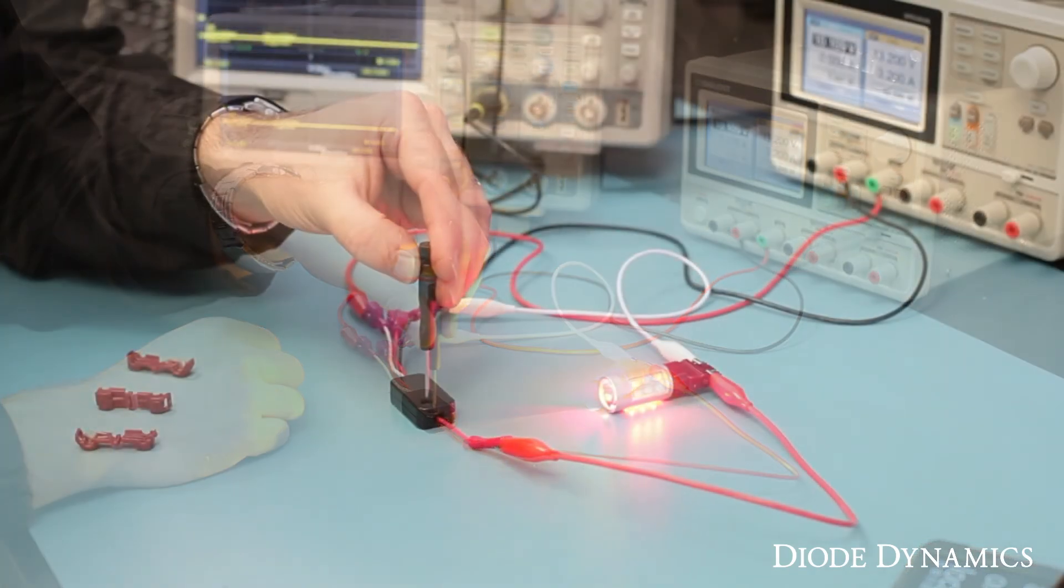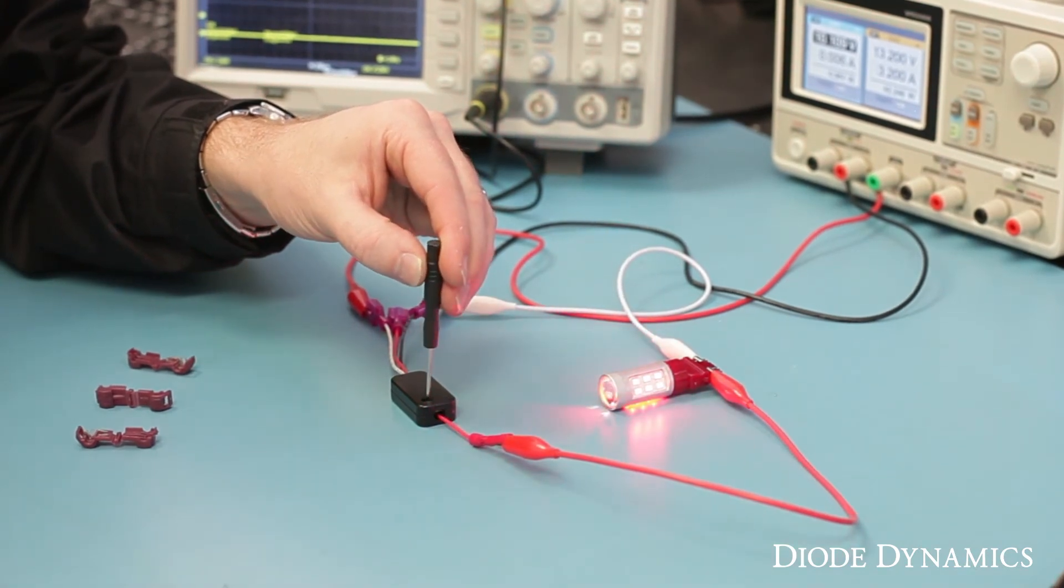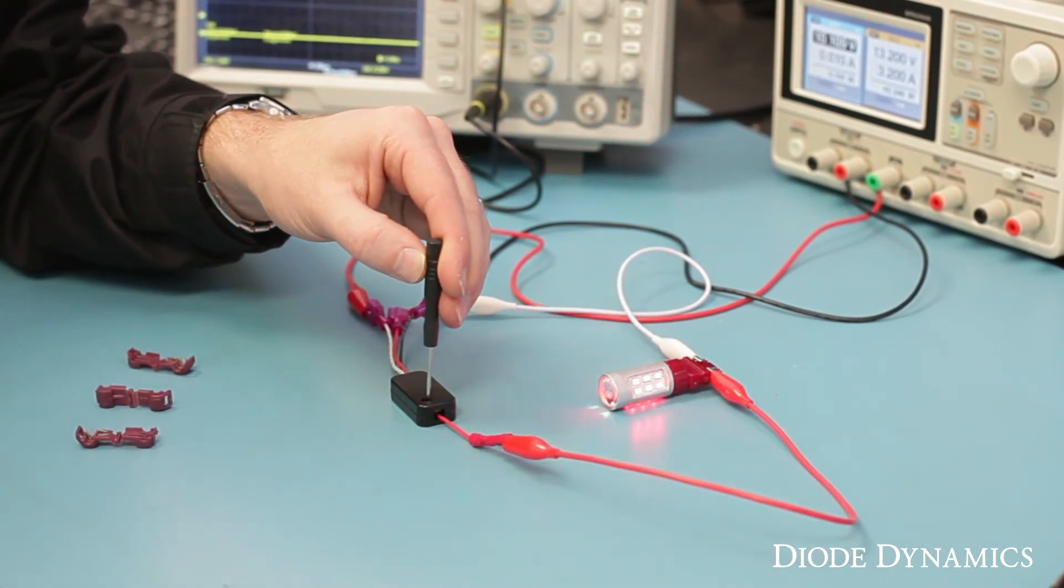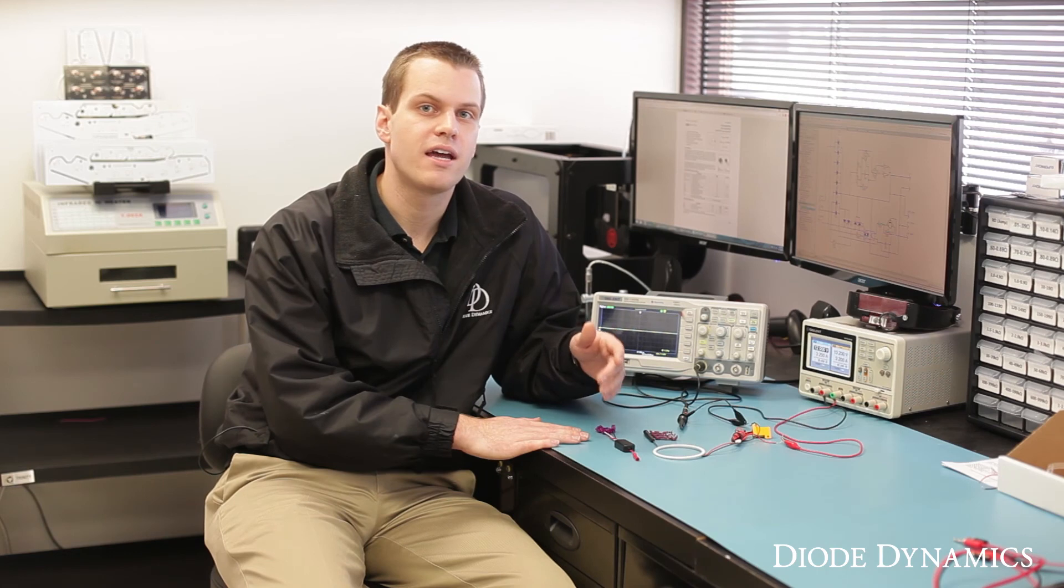I hope you've learned a little bit about how LEDs can be properly dimmed using PWM technology. You can find these modules which are made in the United States at diodeDynamics.com or use our dealer locator to find them at a dealer near you. Thanks for watching.